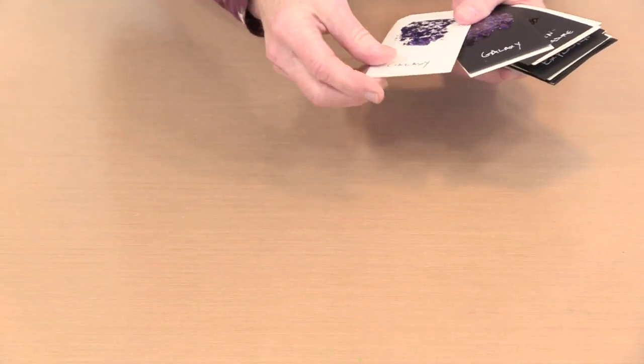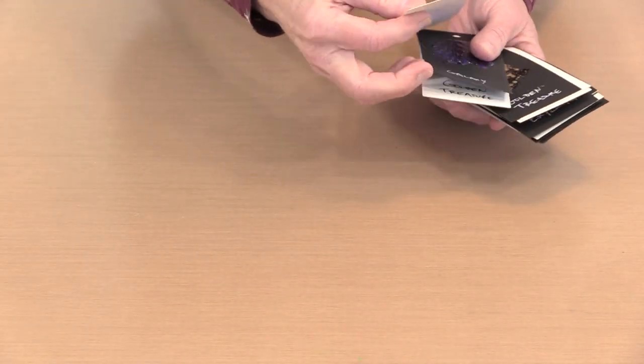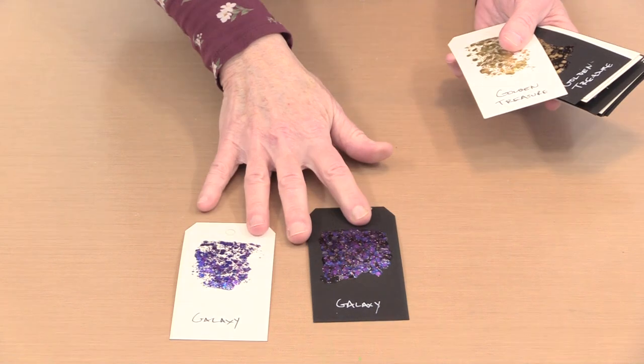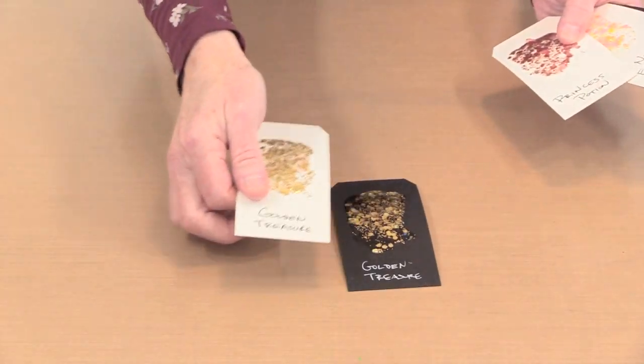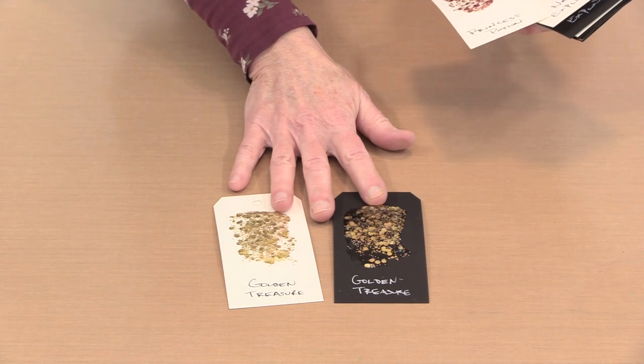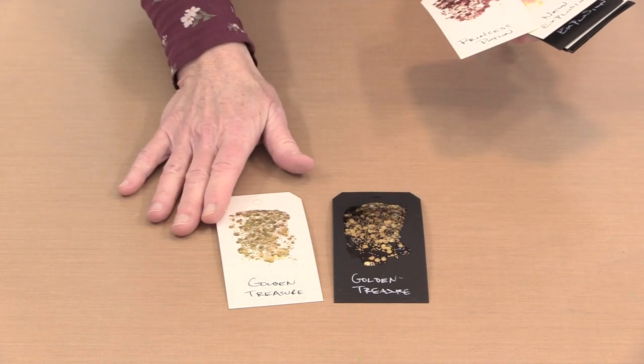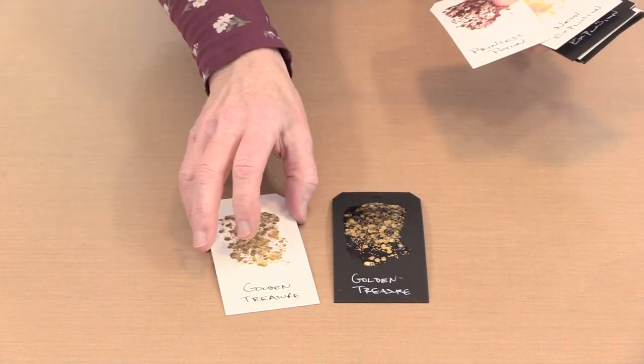Then we have Galaxy, which is also fun because it's multi colors of purple with a little bit of blue mixed in. We have Golden Treasure next, which is just what it sounds like. It's lots of different sizes with basically gold glitter.